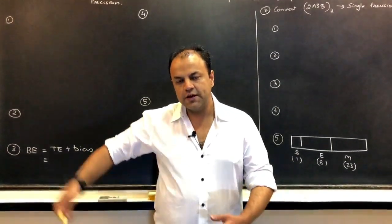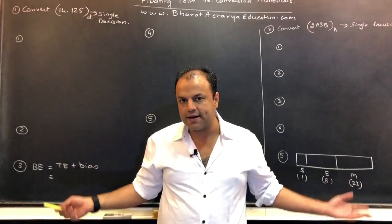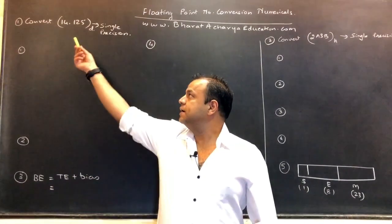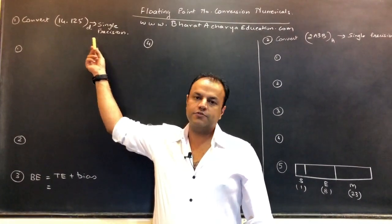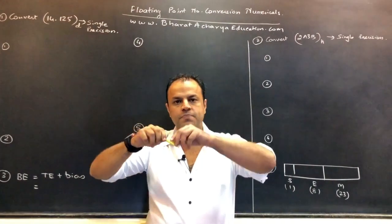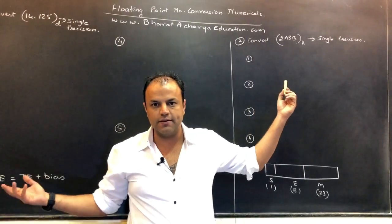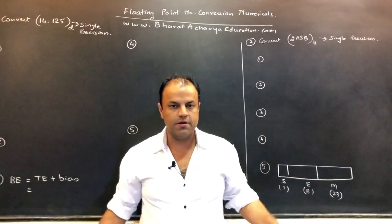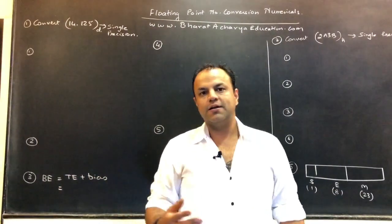I'm going to solve two sums. There are only two variations that can happen in this sum. Either they'll give you a decimal number and ask you to convert it into one of the floating point formats, or they'll give you a hexadecimal number. These are the only things that can happen. So we're going to solve both — one decimal, one hexadecimal.